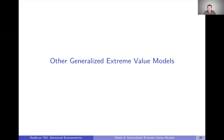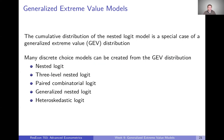We've covered the nested logit model over the last four videos. Now let's talk about some other generalized extreme value models — generalizations of the nested logit that can give us more flexible substitution patterns and correlations among alternatives. We're not going to cover the details of any of these, just give you a flavor for what's out there. Specifically, we'll briefly cover four models: the three-level nested logit, the paired combinatorial logit, the generalized nested logit, and the heteroscedastic logit.